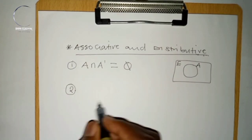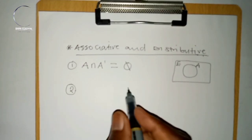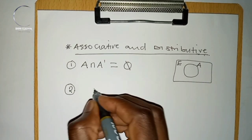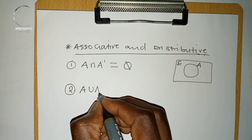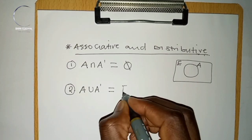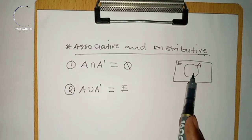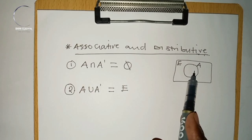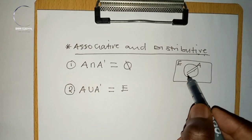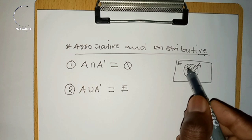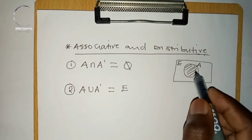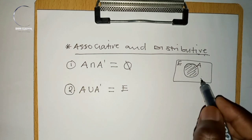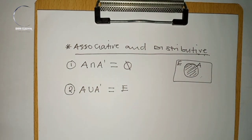The second rule states that a given set union its complement gives us the universal set. Demonstrating on a Venn diagram: set A and its complement — everything inside A and outside A — belongs to the universal set. So A ∪ A' = U.